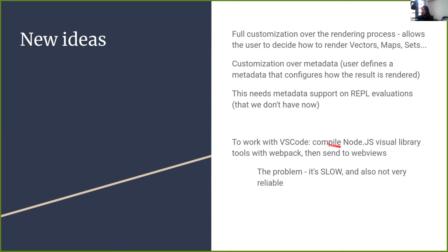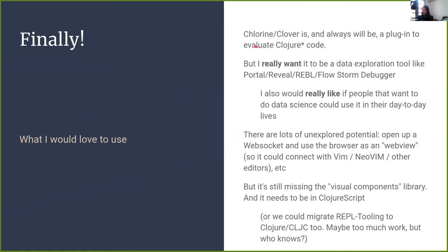To work with VS Code, we are trying compiling Node.js visual libraries with webpack and then sending web views. I did a proof of concept, but it's really slow and not very reliable — sometimes you lose data in the process, sometimes you don't have the exports. Chlorine and Clover will always be plugins to evaluate everything Clojure, so I can't rely on the JVM or plugins that may only exist on the class path, because in Lumo or Babashka, the concept of class path doesn't exactly exist. And I really want Chlorine to become a data exploration tool like Portal and REBL.